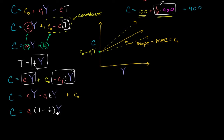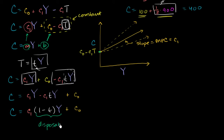You can multiply this out to verify: c1 times 1 times y gives the first term, and c1 times negative t times y gives the second term, and then you're left with autonomous consumption. This makes a lot of sense, because 1 minus the tax rate times aggregate income — if the tax rate is 30%, then 1 minus 30% is 70%, and 70% times aggregate income is essentially what people get in their pockets. This whole term is essentially disposable income.